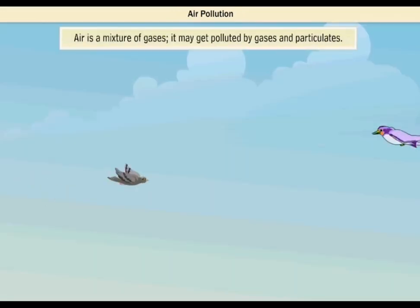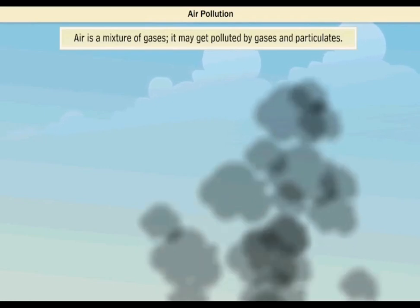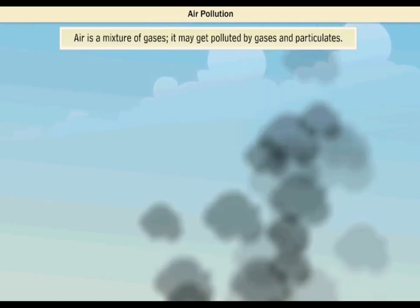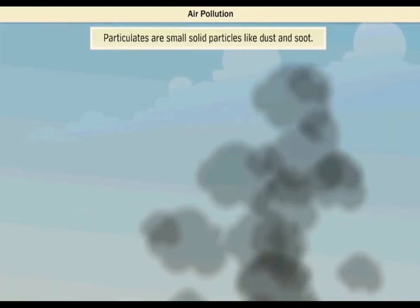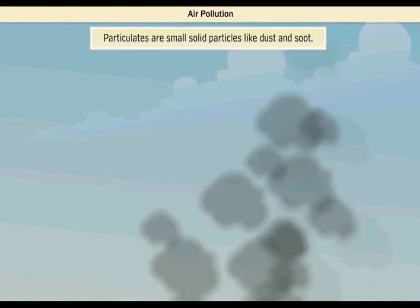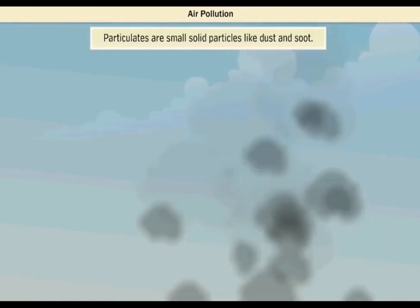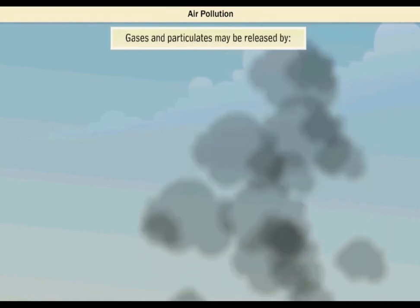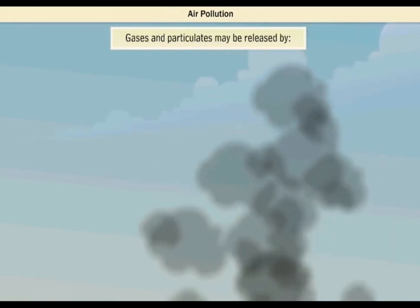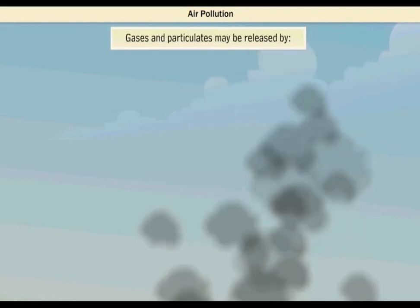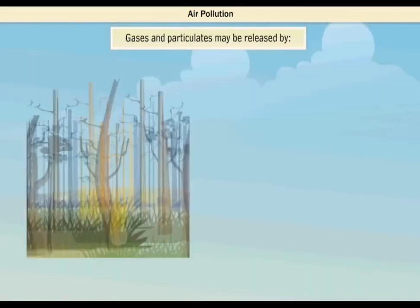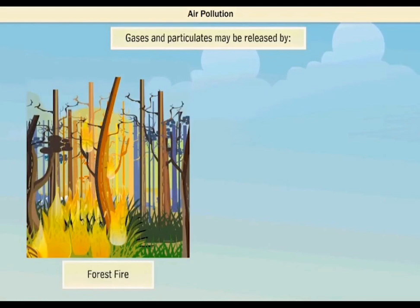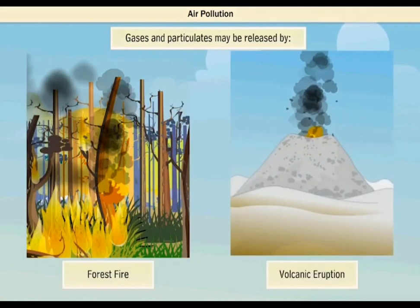Air is a mixture of gases. It may get polluted by gases and particulates. Particulates are small solid particles like dust and soot. Gases and particulates may be released by natural processes like forest fires and volcanic eruptions.